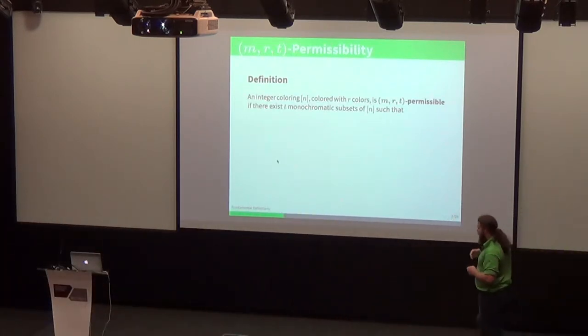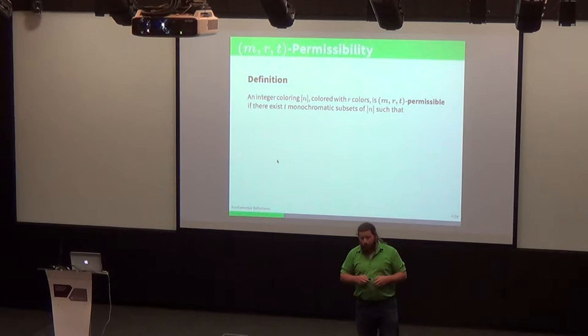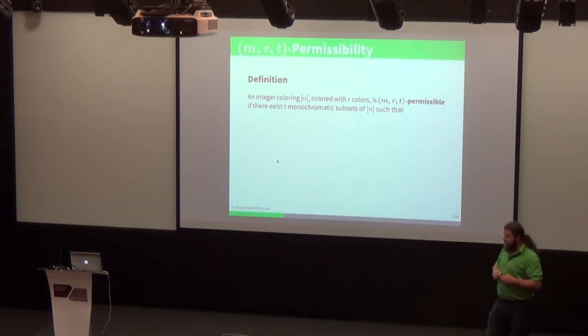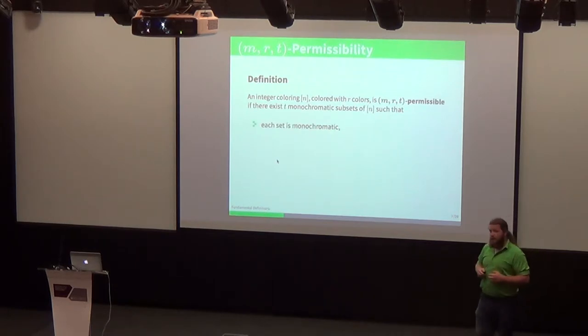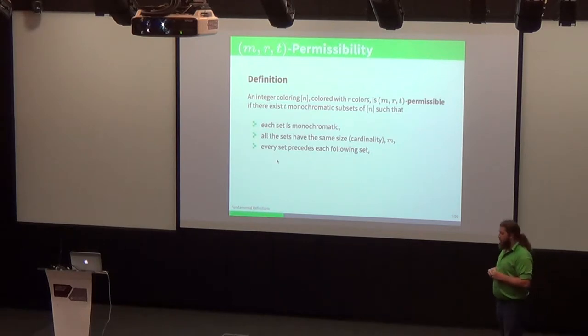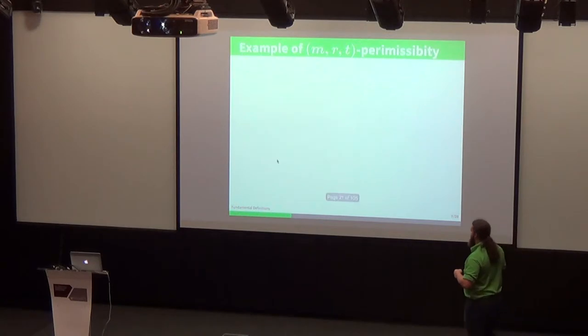Now we use all of those definitions to create this idea of permissibility using parameters m, r, and t. We say that an integer coloring of bracket n colored with r colors is m, r, t permissible if there exists t monochromatic sets of bracket n such that all of our t sets are monochromatic, they all have the same cardinality which is m, each set precedes one another so they don't overlap, and the diameters of each successive set is non-decreasing. They can stay the same, but they can't get any smaller as you move forward.